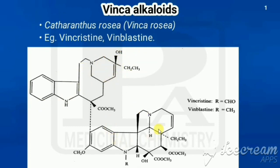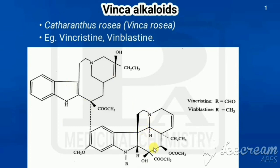The second part is called vindoline, which has an indoline-containing moiety. So the two parts are catharanthine and vindoline. Where we have an aldehyde group, that compound is called vincristine; where we have a methyl group instead, that is called vinblastine.